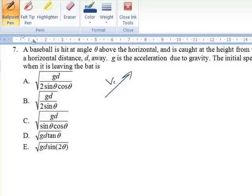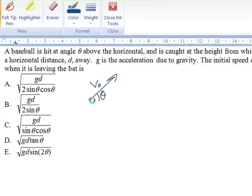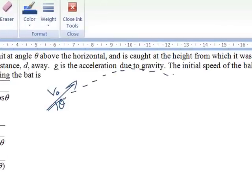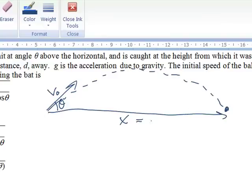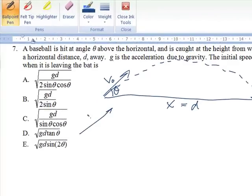We have some initial speed v naught with here's its angle theta. The ball will go up in some parabola curve and then come back down to the same height. So the distance that's traveled here is x equals d. And we should be able to break down our initial velocity into components so that we can split this up into x and y components.